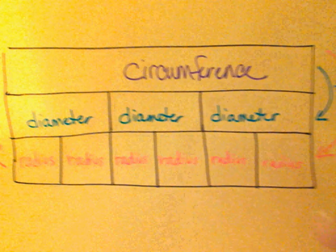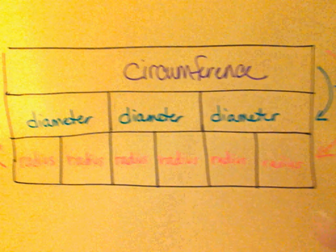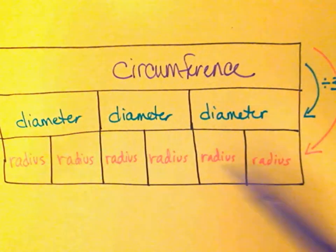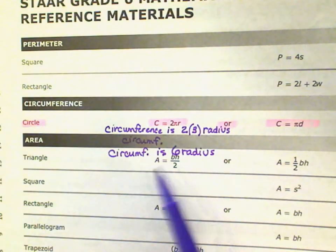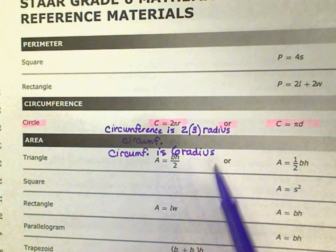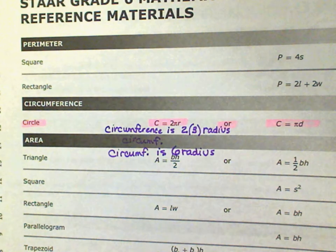What they're looking for is circumference. Circumference is — well, what's 2 times 3? That's 6 radius. In the previous video, we talked about the relationship between circumference and diameter, and circumference and radius. When we drew the picture, we talked about how it takes 6 radii to make one full circumference. That's exactly what this formula says: circumference is 6 radius.